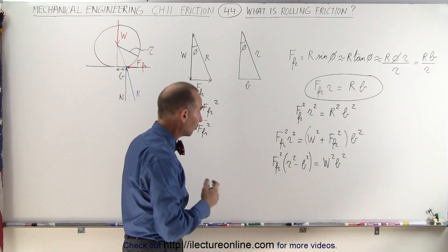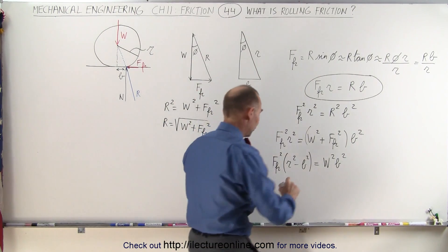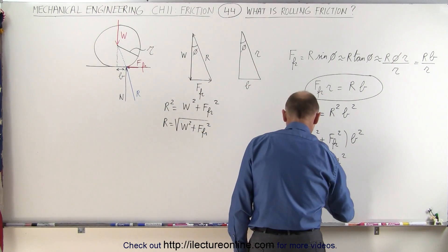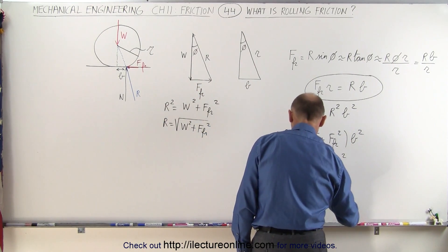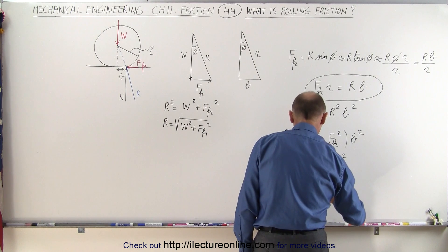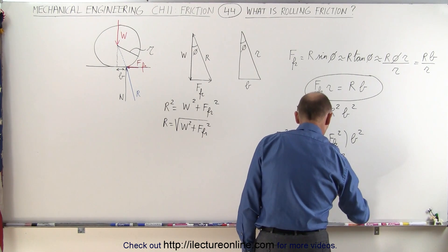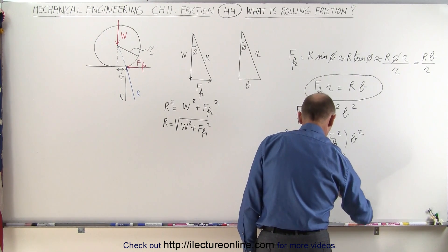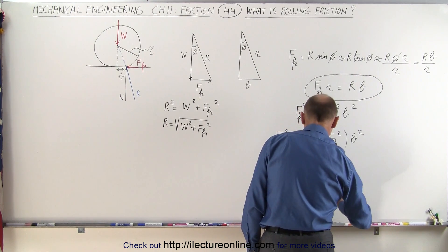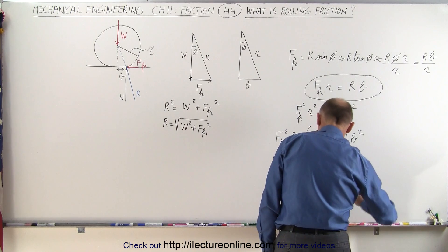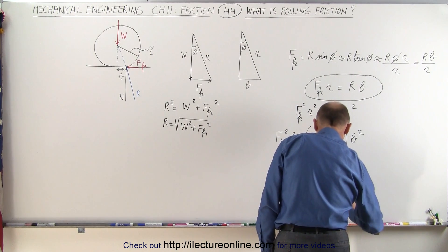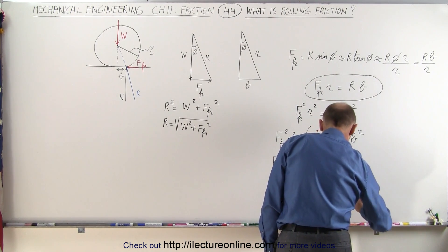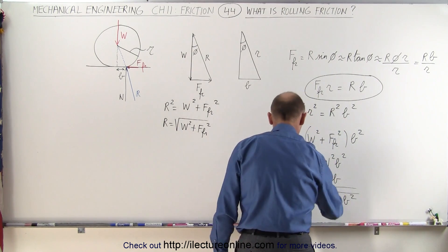We can take the square root of both sides and solve for the friction force: the friction force is equal to the load times B divided by the square root of the radius squared minus B squared.